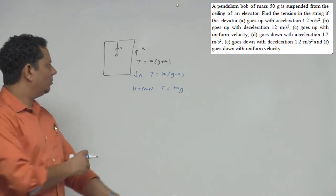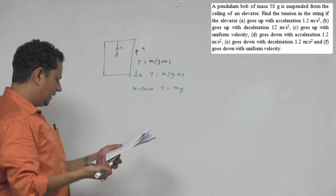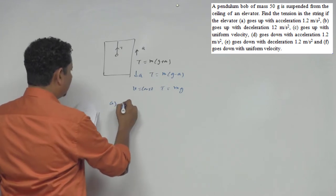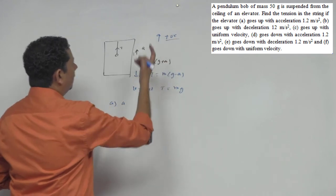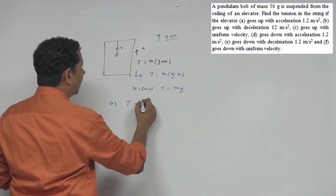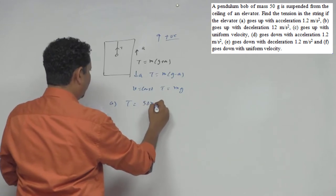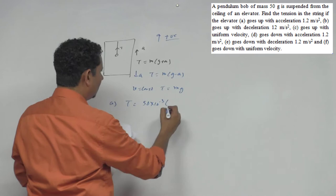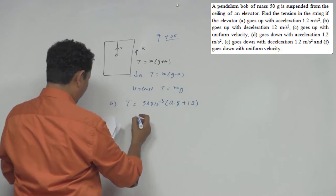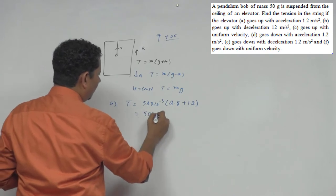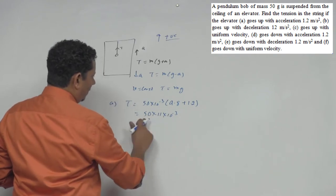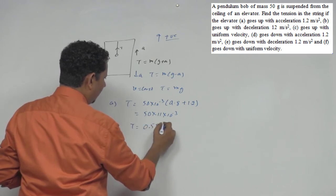पहले वाला case है, goes up with acceleration 1.2, तो आपकी tension हो जाएगी M(g+a). M दिया है 50 gram, so 50 into 10 to the power minus 3, multiplied by 9.8 plus 1.2, so ये value आपकी हो जाएगी 11. So 50 into 11 into 10 to the power minus 3, this will be equal to 550 into 10 to the power minus 3, so आपकी tension आ गई 0.55 Newton.